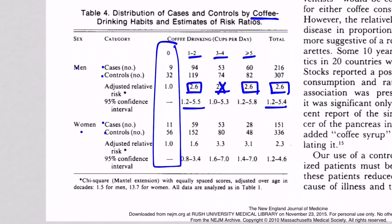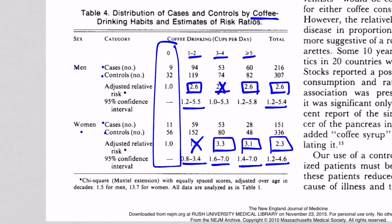For women, one confidence interval includes one — don't care. But then the next ones don't include one. So now we're starting to see something: the more coffee you drink, the more likely you are to have pancreatic cancer. But remember, people often smoke while drinking coffee, so maybe we need to adjust for that.